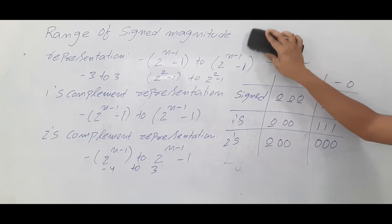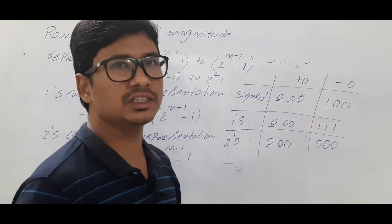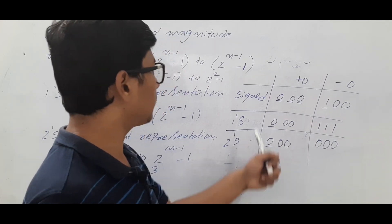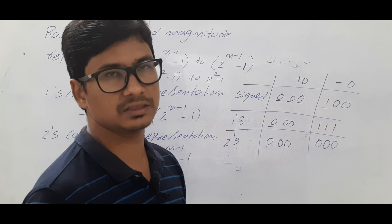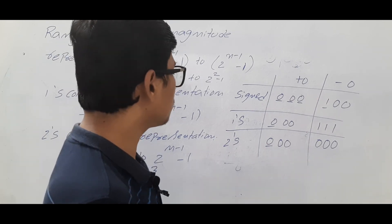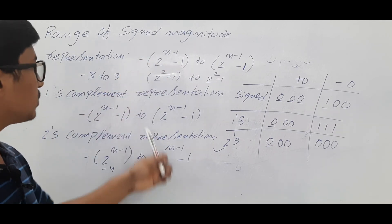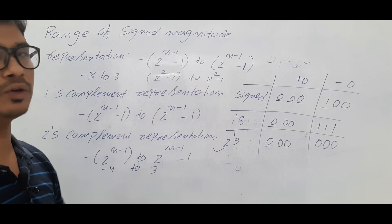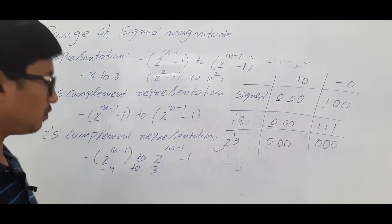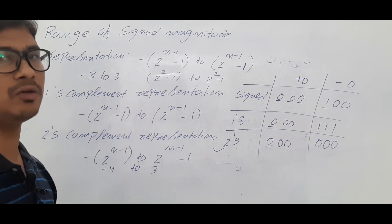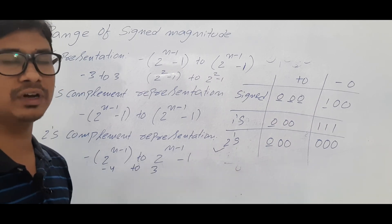Whether it is plus 0 or minus 0, it is zero — so all representations should store it the same way. In sign magnitude and one's complement, plus 0 and minus 0 have two separate representations, wasting one pattern. In two's complement, both have the same representation 000, freeing up one bit pattern — which is used for minus 4. That is why two's complement can store minus 4 to plus 3, while sign magnitude and one's complement can only store minus 3 to plus 3.